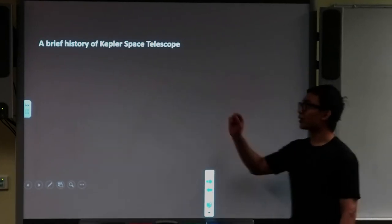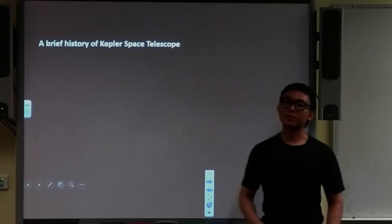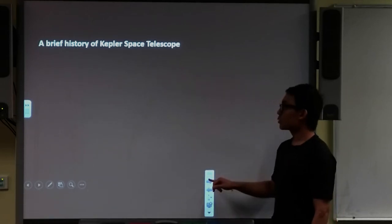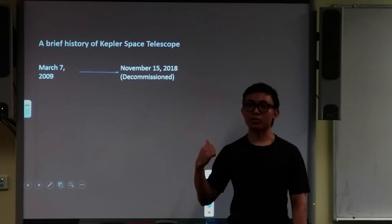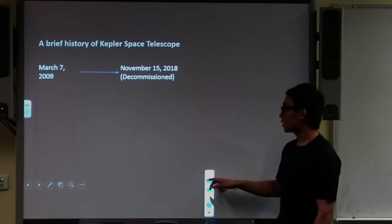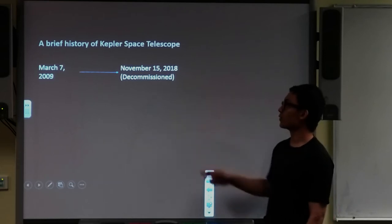Now we're going to talk a little bit about the brief history of the Kepler space telescope. It was launched by NASA back in 2009, March 7, until it was decommissioned in 2018, November 15.